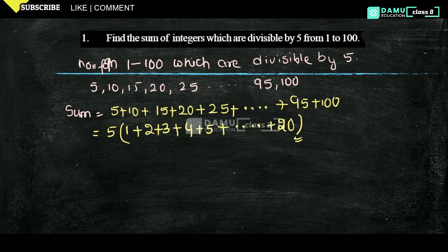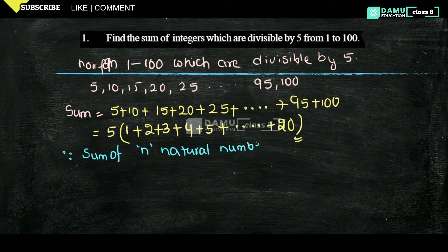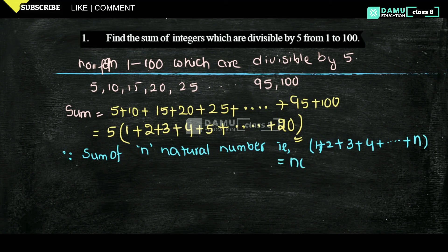Actually, there is a formula for the sum of n natural numbers: the sum of n natural numbers — 1 plus 2 plus 3 plus 4 plus and so on plus n — equals n into (n plus 1) by 2. That is the formula. Here, n is equal to what? Here n equals 20.